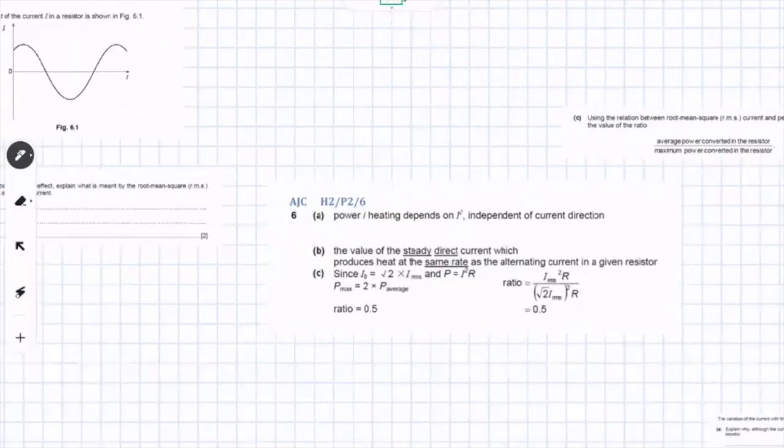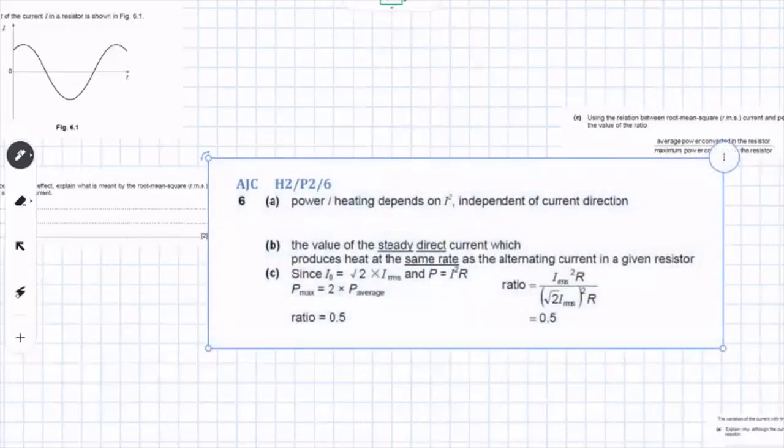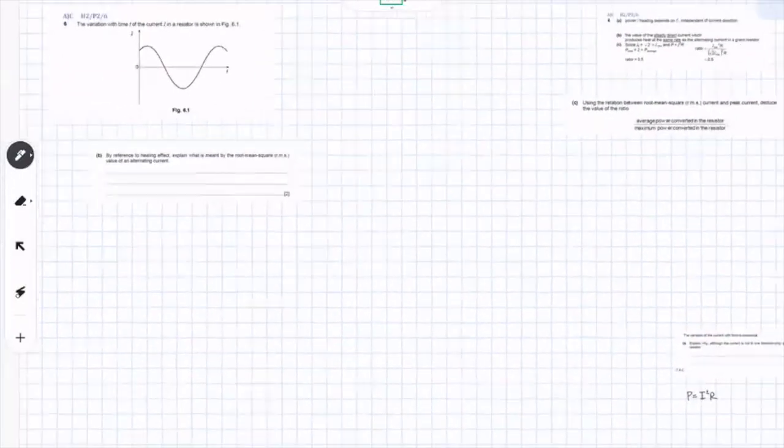Yes. That means something else. This is AC, right? You have some other DC current, but that DC current will produce... will produce the same. Okay? Yeah. Failure of steady current... Steady direct current which produce... Heat at the same rate as the alternating current. That's what they mean. Okay?